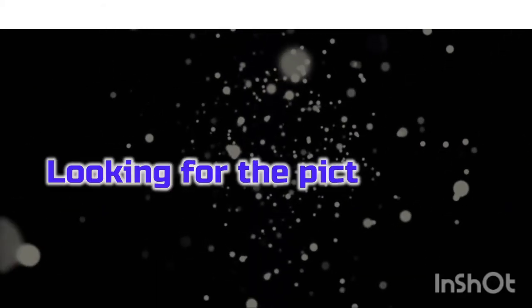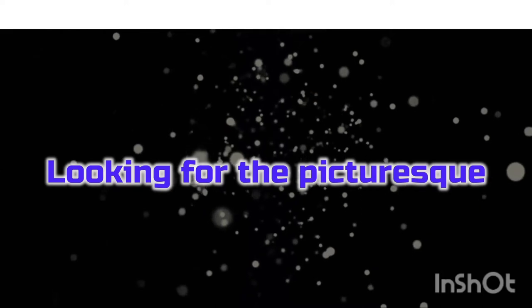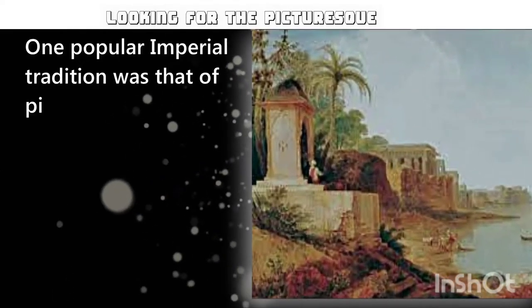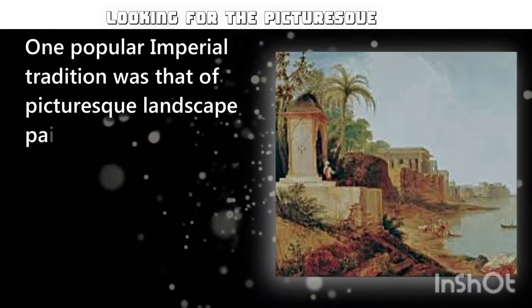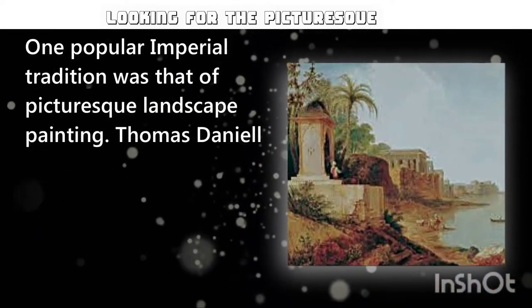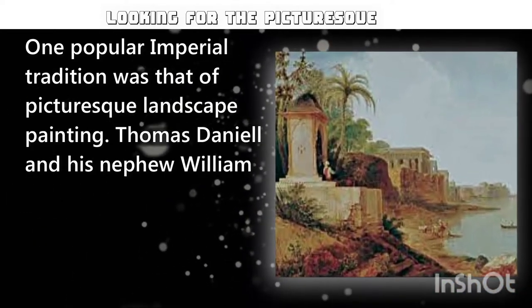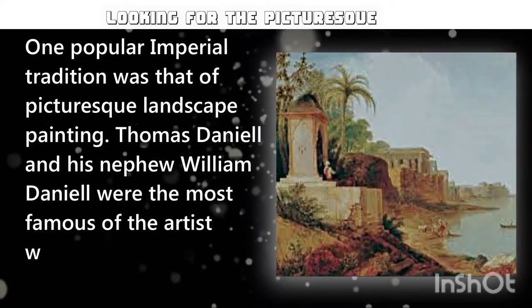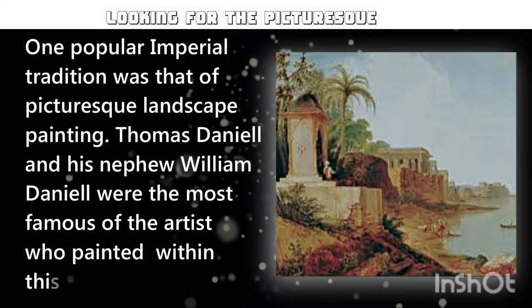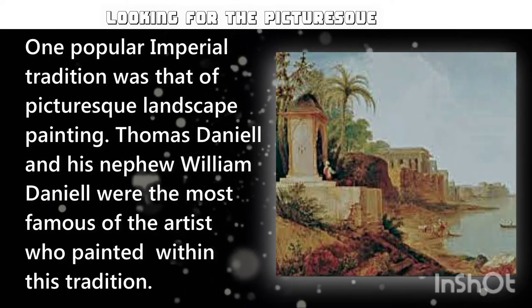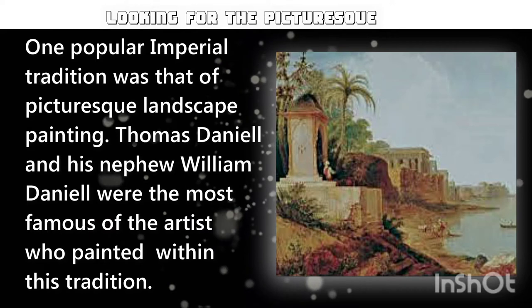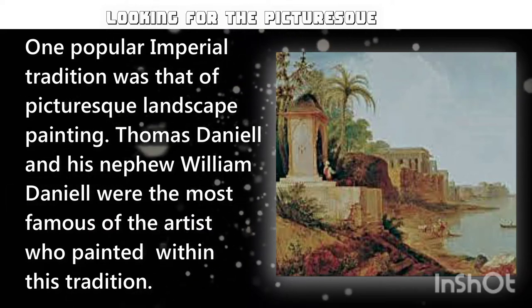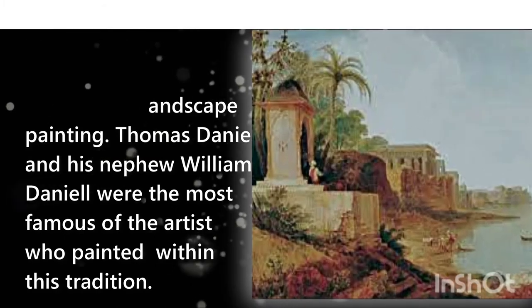The first concept was picturesque — to paint landscapes. European painters were interested to paint the glory of the British era in India. One of the famous painters of this time were Thomas Daniel and his nephew William Daniel. In their journey from Calcutta to northern and southern India, they painted all the British glory they saw.